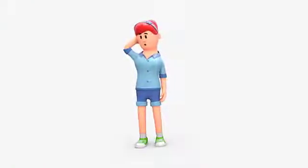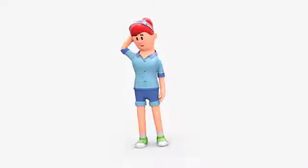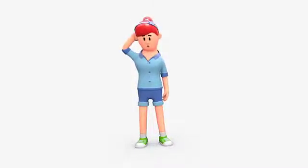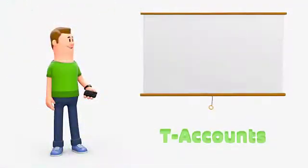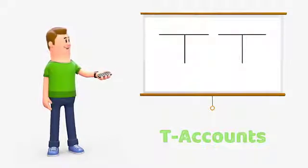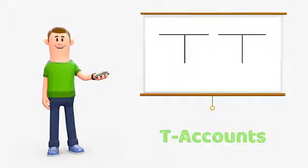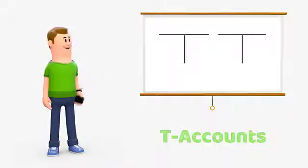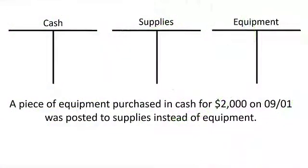Correcting journal entries can seem confusing at first, but it helps if you can visualize the original transaction and the correcting transaction together. That's why T-accounts are often the best way to analyze correcting entries. Let's look at an example of how we can use T-accounts to analyze a correcting entry.